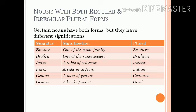Certain nouns have both regular and irregular plural forms, but they have different significations. For example: 'brother' — when it means one of the same family, its plural will be 'brothers'; but when it means one of the same society, its plural will be 'brethren'. The same case applies to other words like 'index', 'genius', etc.